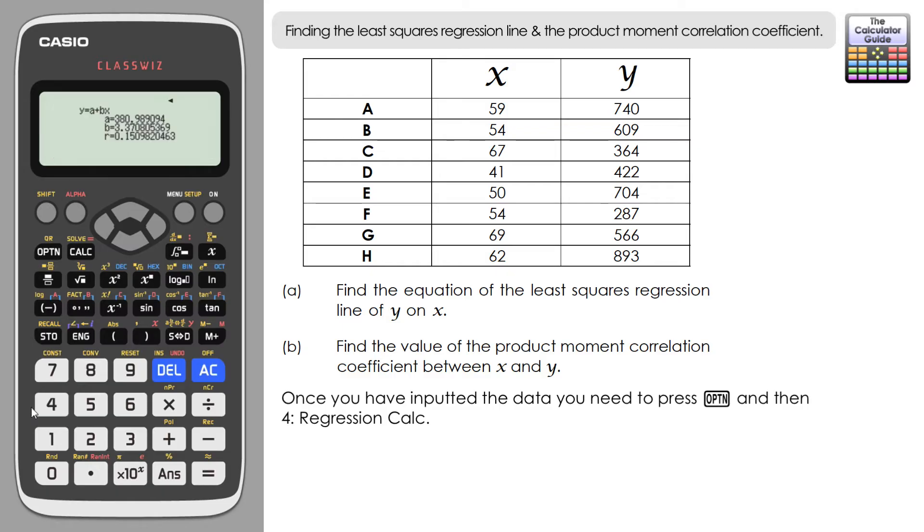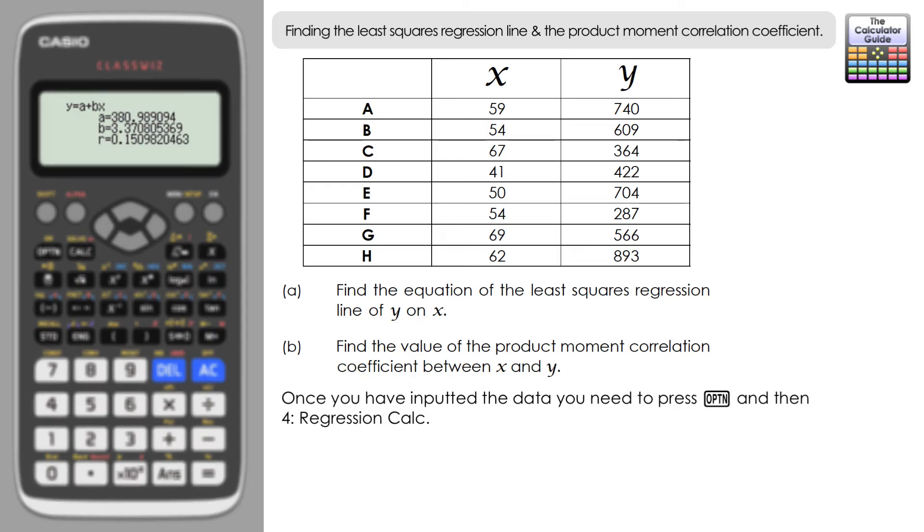And you can see that we've got A, B, and R. Now for part A, we need to find the least squares regression line of Y on X. And basically, we can write out the equation for the line that we have actually displayed on the ClassWiz here: Y equals A plus BX, using the two results that we've got. So I'm going to round these to two decimal places. So I'm going to say Y equals 380.99 plus 3.37X. And there we go, that's our least squares regression line of Y on X.